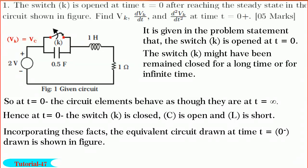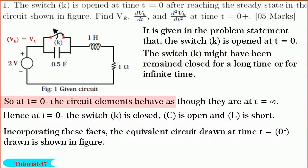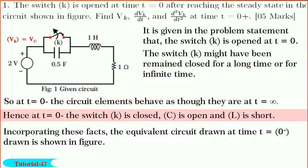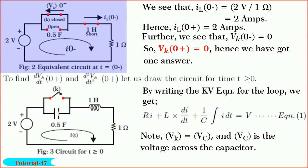In the problem statement, it is given that the switch k is opened at t equal to 0 after steady state is reached. What does this mean? The switch might have remained closed before switching for a long time or for an infinite time. So at t equal to 0 minus, the circuit elements behave as though they are at t equal to infinity. Hence at t equal to 0 minus, the switch k is closed, C is open and L is short. Incorporating these aspects, the equivalent circuit at t equal to 0 minus drawn is shown in figure.